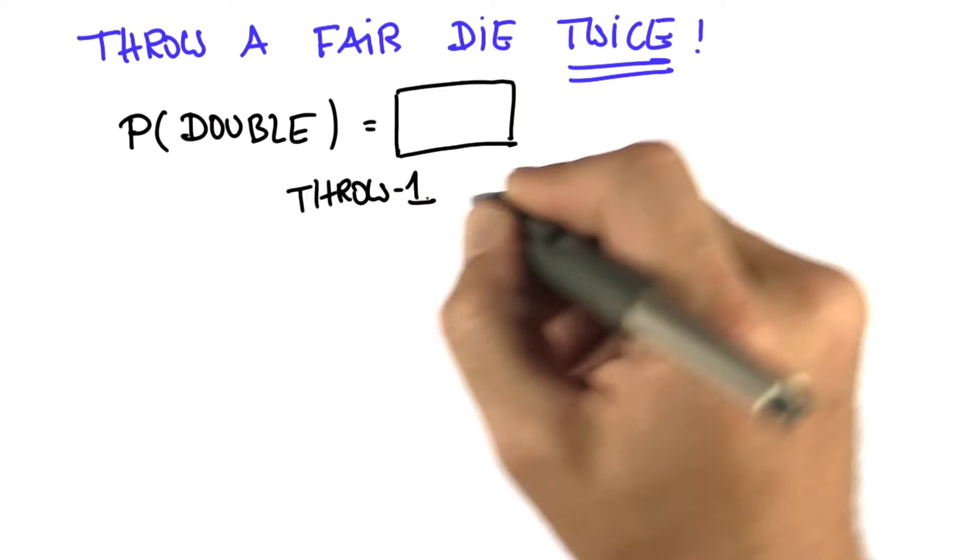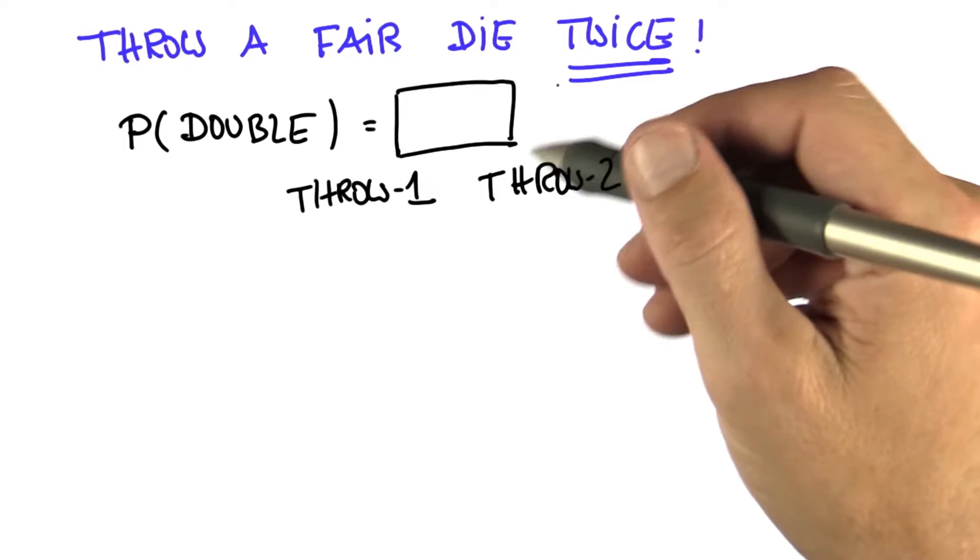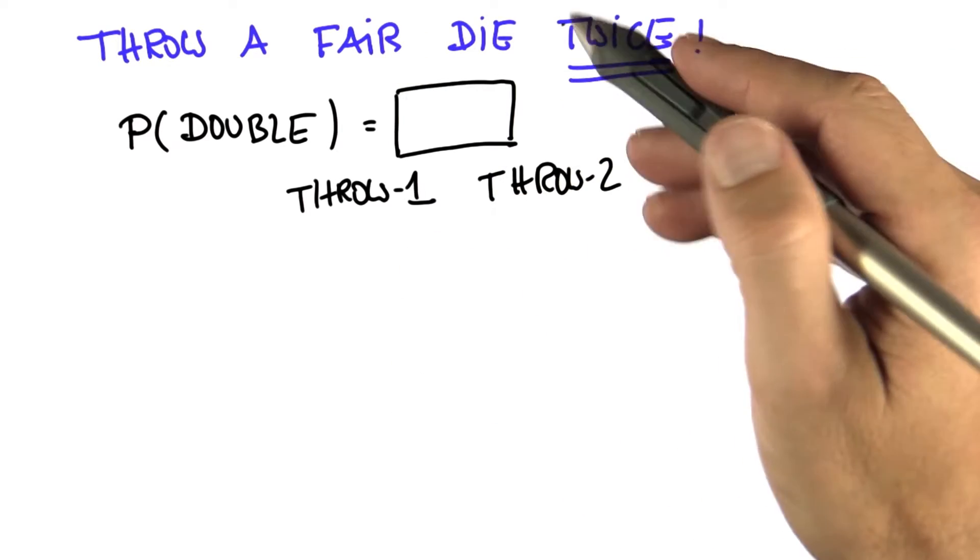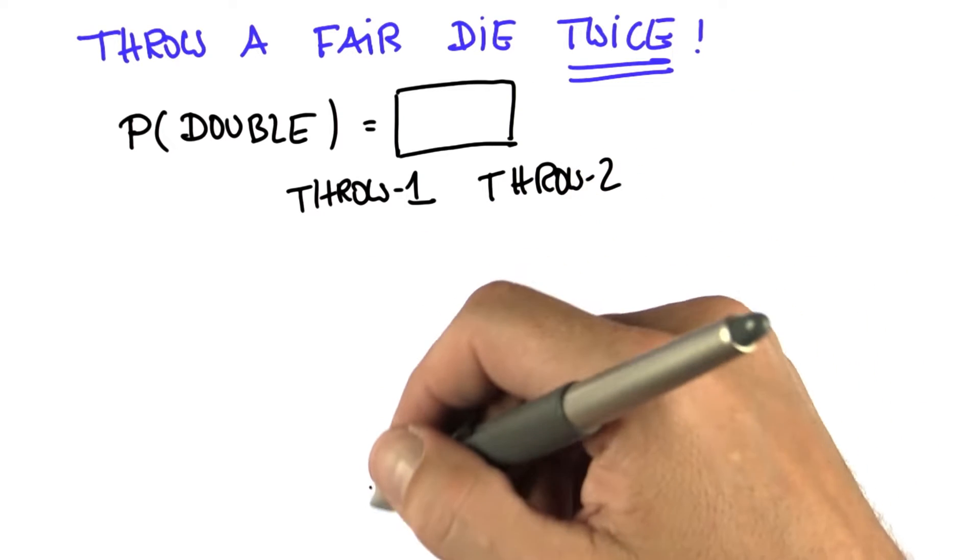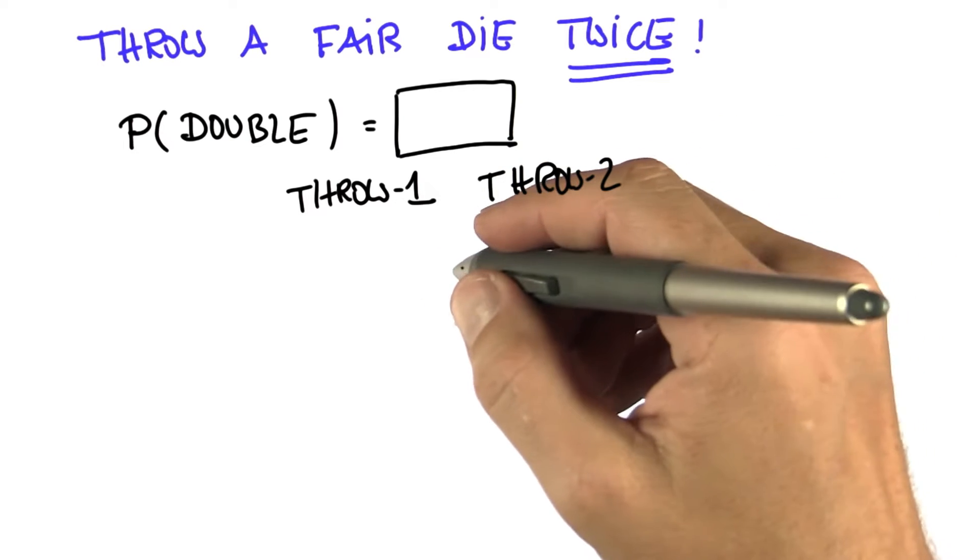And once again, we can answer this using a truth table. Now the truth table will have 36 different entries, 6 for the first throw times 6 for the second throw. And I have space on this tablet to draw all the 36 entries, so let me just draw the ones that really matter.